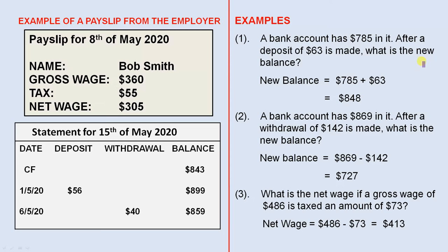Let's look at some simple examples. A bank account has $785 in it. After a deposit of $63 is made, what is the new balance? The new balance will be $785 plus $63, which is $848.